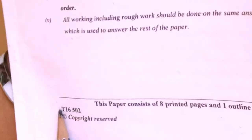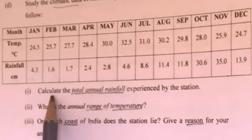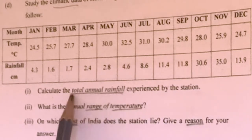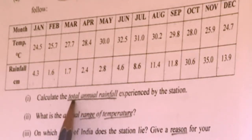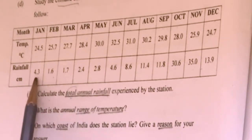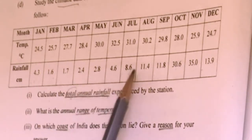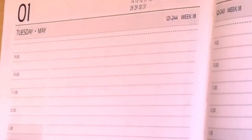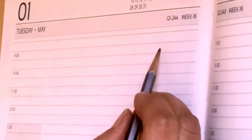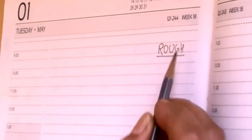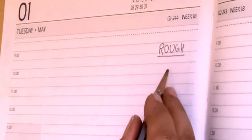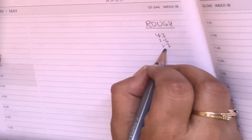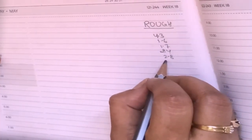I have taken this question from the year 2016. Here you will find that you have to calculate the total annual rainfall experienced by the station. As only the word 'total' is there, you have to add all the rainfall values to get the answer. In your examination sheet, towards the right-hand side, write 'rough work' and then show the calculation the way I am doing now — write down all the values and add them up.